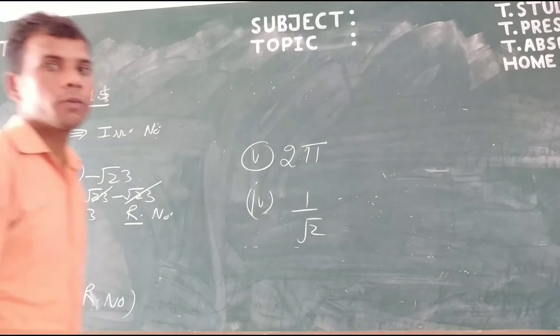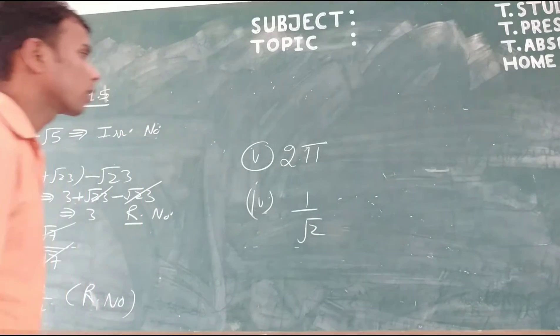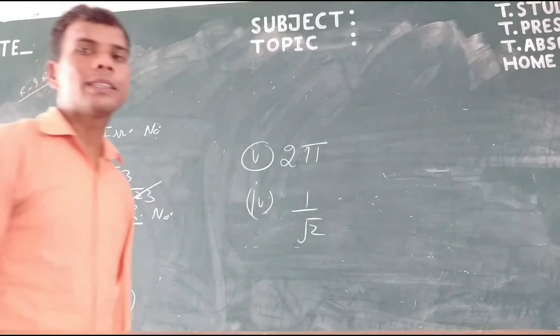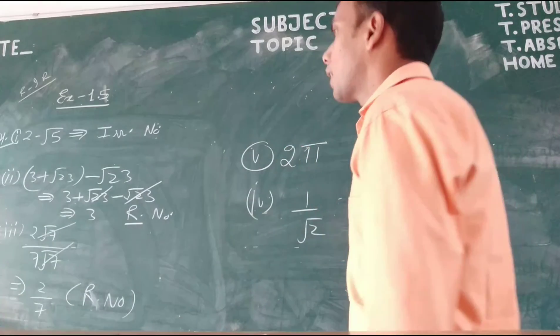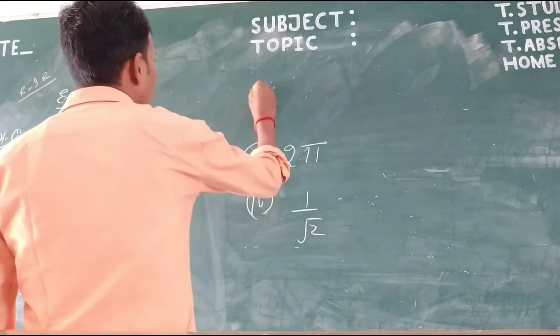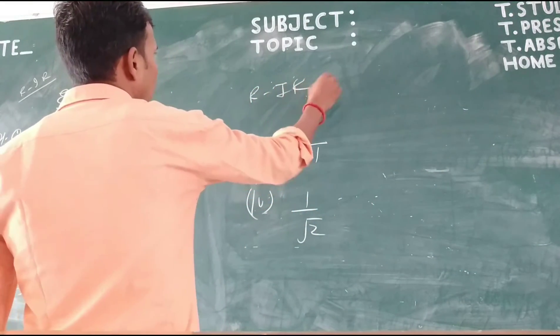Now, we solve fifth part. In the fifth part, given here 2 pi. We know that pi is an irrational number, and 2 is a rational number. We know that the product of rational and irrational is always irrational.